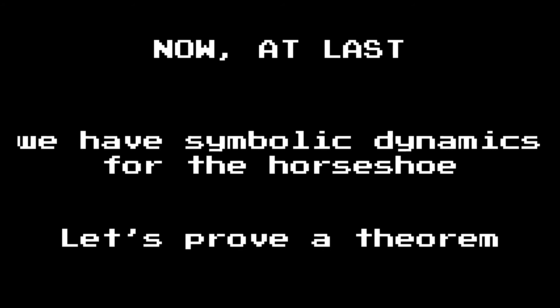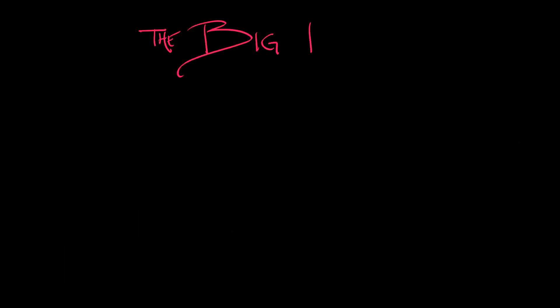All right, now finally we have symbolic dynamics set up for the horseshoe. We know how to assign itineraries to points by infinite sequences of zeros and ones. Let's get to work and prove some results about the dynamics of the horseshoe map.